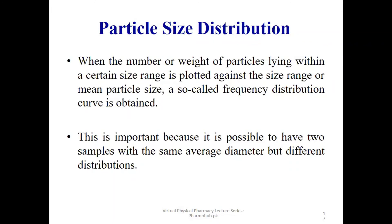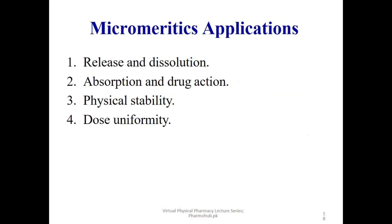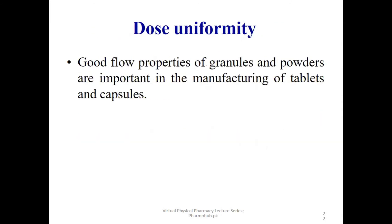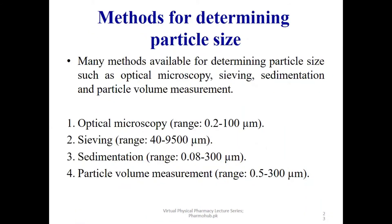Particle size distribution is determined when the number or percentage of particles lying within a certain size range is plotted against that size range or mean particle size, forming frequency distribution curves. It is important to note that two samples can have the same average diameter but different distributions. Pharmaceutical applications discussed in micrometrics include release and dissolution, absorption and drug action, physical stability, and dose uniformity.